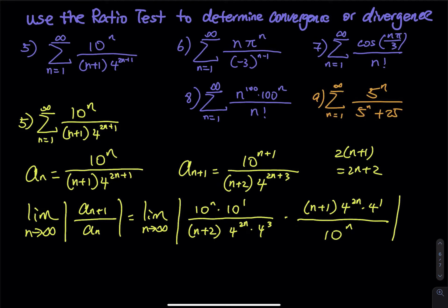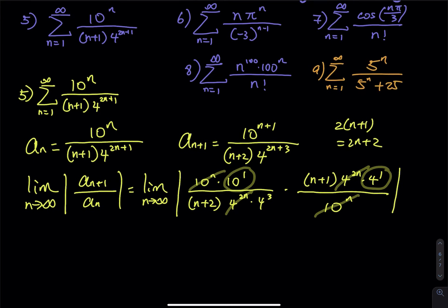Then we cancel as much as we can: 10 to the n cancels with 10 to the n, and 4 to the 2n cancels. The 4 and the 10 you can take outside — that gives you a 40. You have a 4 and a 4 to the third, so the bottom will be 4 squared. That means outside of the limit we have 10 divided by 4 squared.